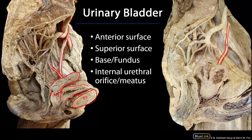The urinary bladder is going to void through the urethra, and the urethra is going to begin just distal to the neck of the bladder. The neck would be here where we have the internal urethral orifice or meatus. This would be the fundus or base of the bladder, this would be the superior surface, and this would be the anterior surface. It's difficult to appreciate the internal urethral orifice here because it looks like this bladder was sectioned a little to the left of the midline, and we pick the urethra back up as we transition into the penis.